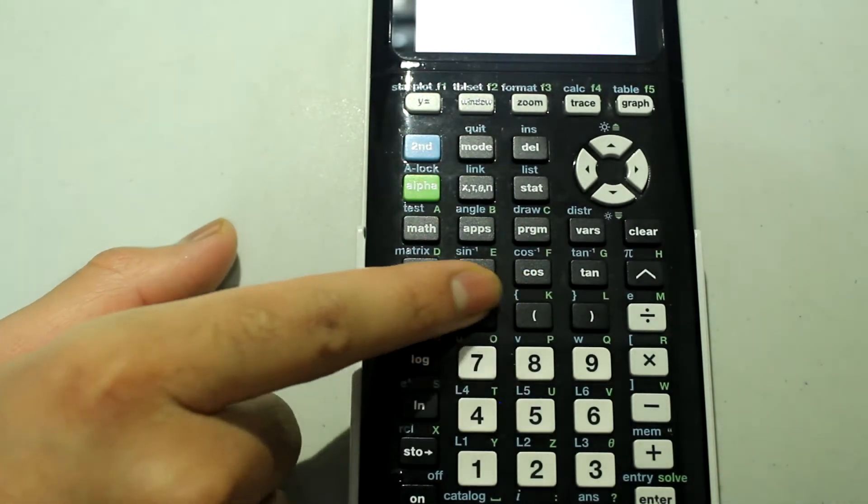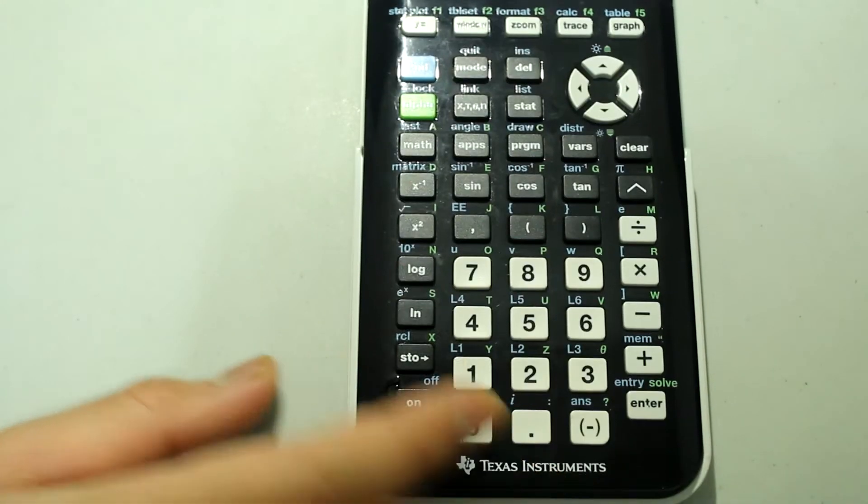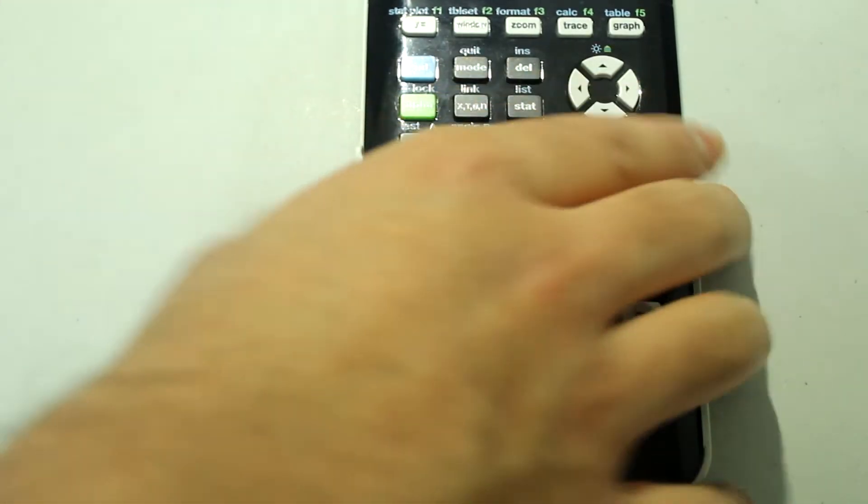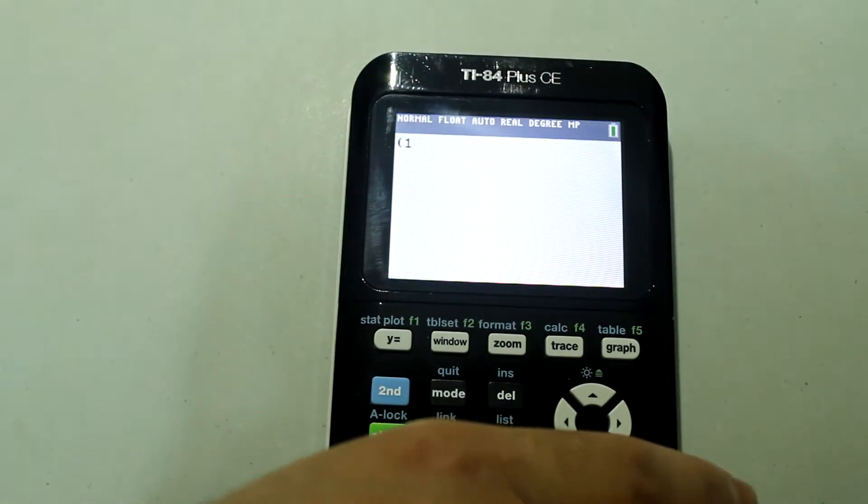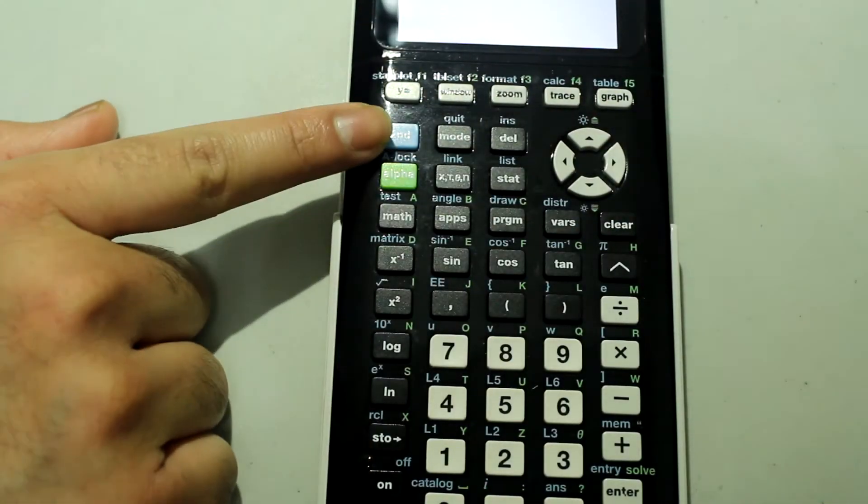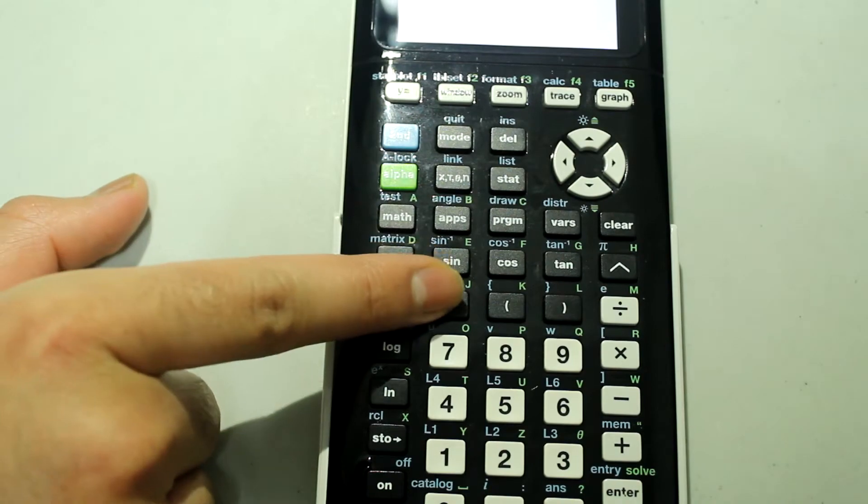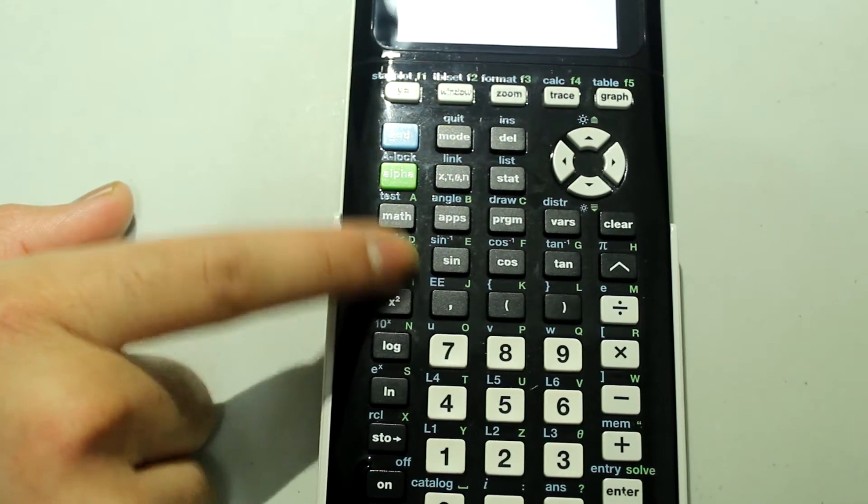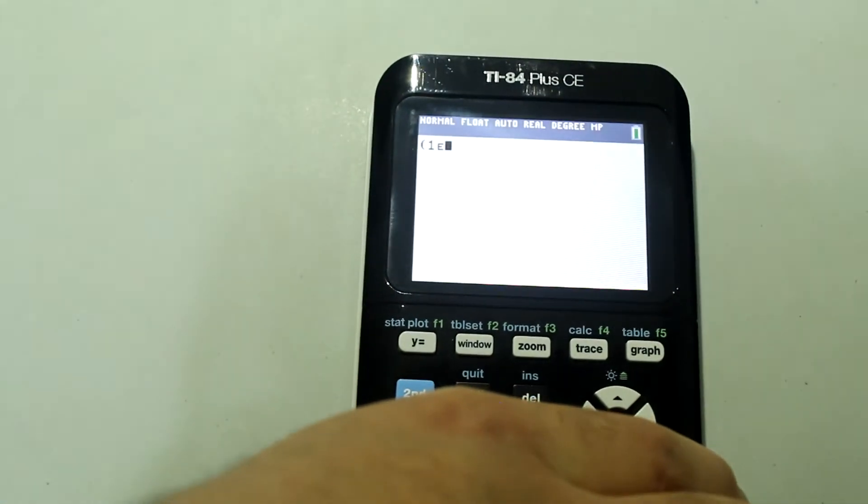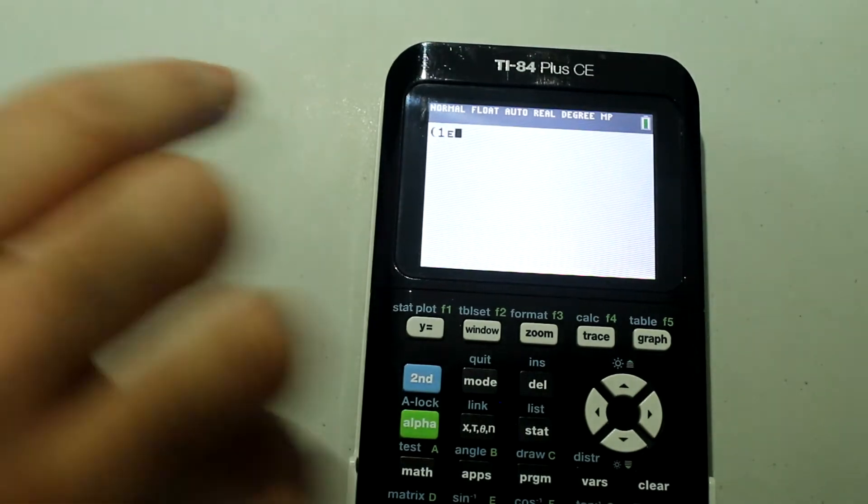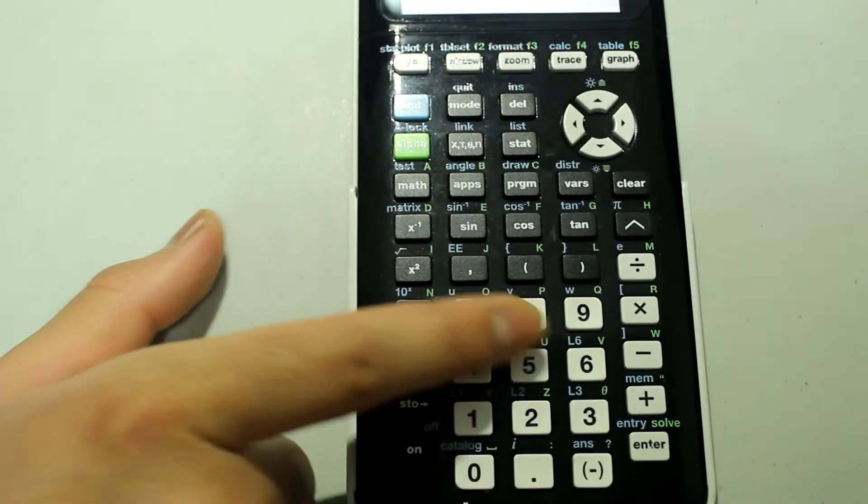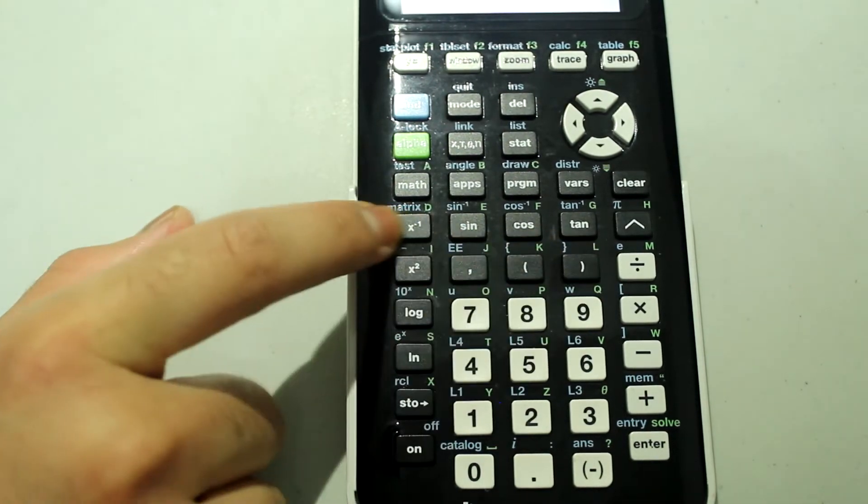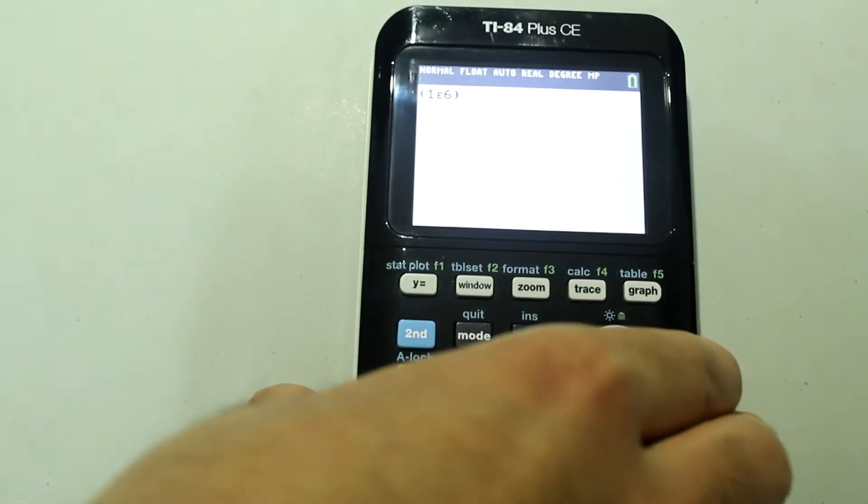I'm going to open a parenthesis, and then I'm going to type in one on the number pad. So I have this so far, and then I'm going to press second, and then the comma button to choose E. So this is what it looks like so far. And then I'm going to type in six on the number pad, and then close the parenthesis. So the entry looks like this.